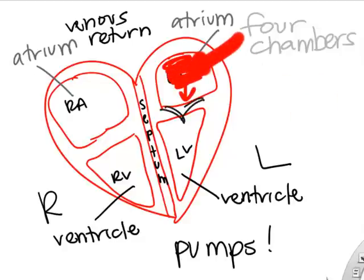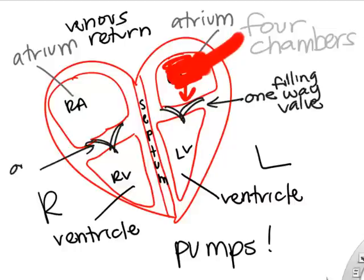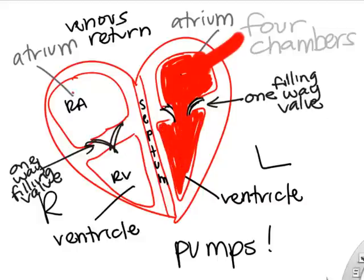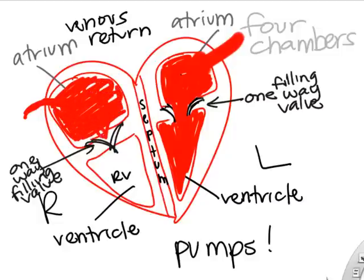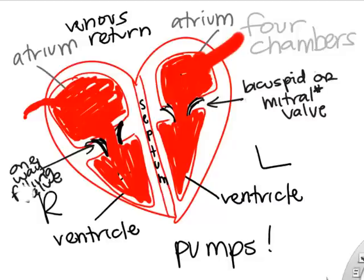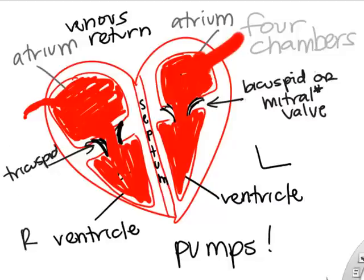The atria fill with blood. There are one-way valves separating the atria from the ventricles — all valves in the heart are one-way, like one-way doors, pushed open by blood pressure. When blood pressure in the atria builds, it pushes open the filling valves. The left side valve is called the bicuspid or mitral valve, and the right side is the tricuspid valve.